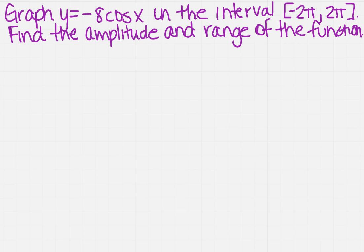If you recall, we can find the amplitude and the range right off the bat. We don't even need a table of values. Remember, the amplitude is going to be the absolute value of the number in front. So the absolute value of negative 8 is just 8. So our amplitude is going to be 8.